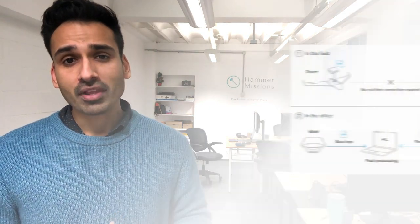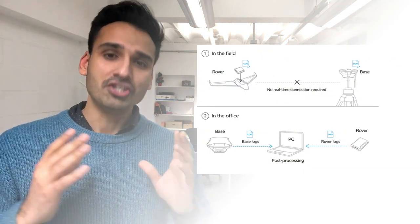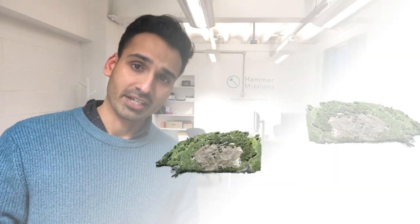The third method is PPK, which is similar to RTK but instead of triangulation or corrections happening in real time, they happen in the post-processing step. In summary, geo-referencing accuracy is about how well your outputs actually align with the real world — that's what we mean when we refer to geo-referencing accuracy.